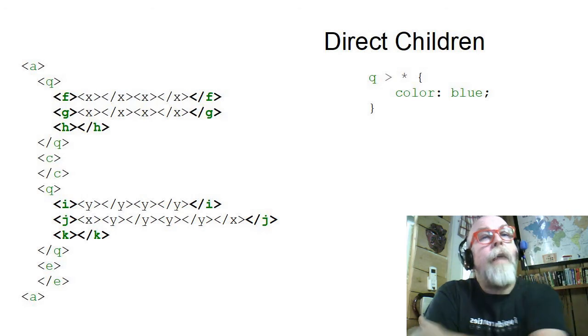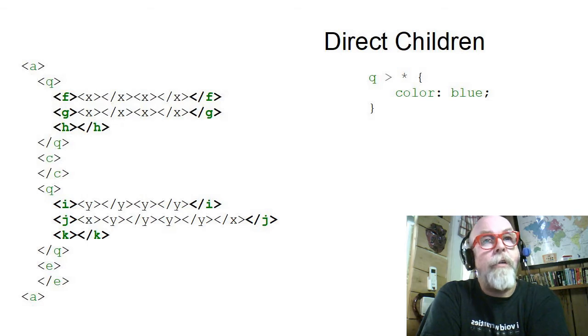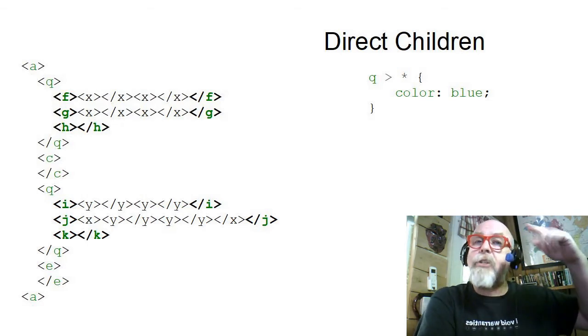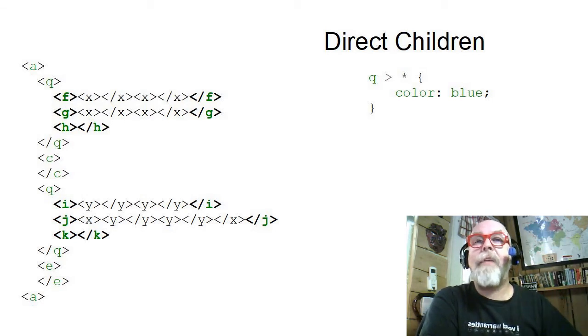Here I'm saying Q direct children star. So find all of the elements that are of type Q and find all of their direct children. You can see that that would be the F, G, and H tags and the I, J, K tags that are directly within Q.